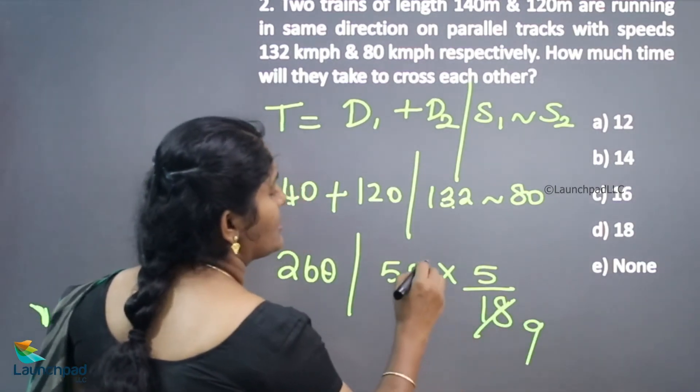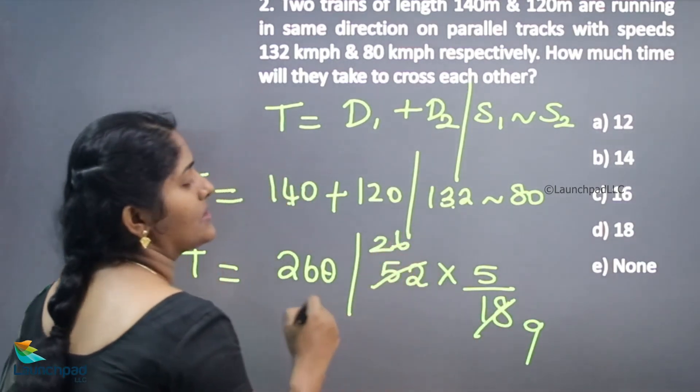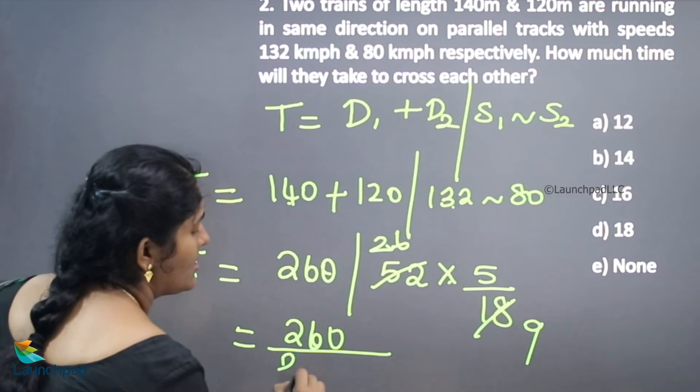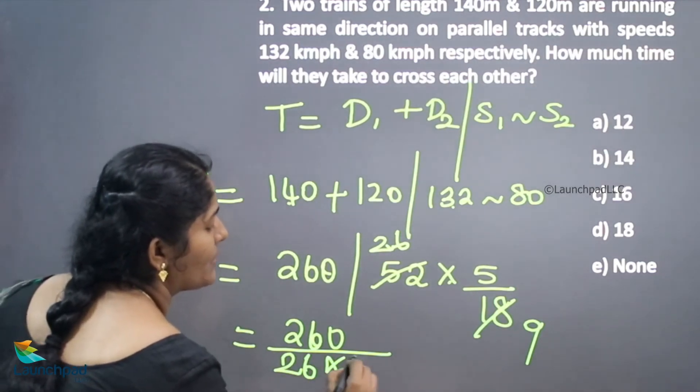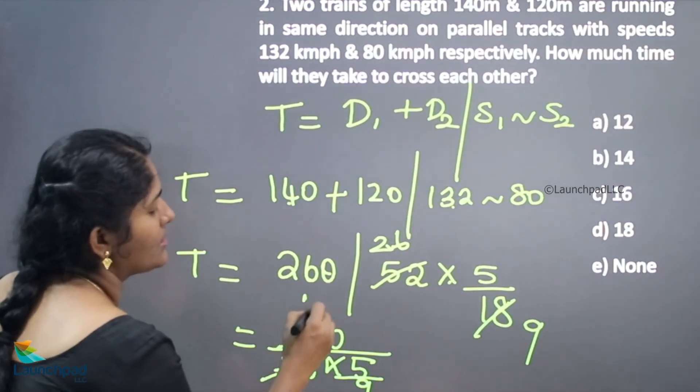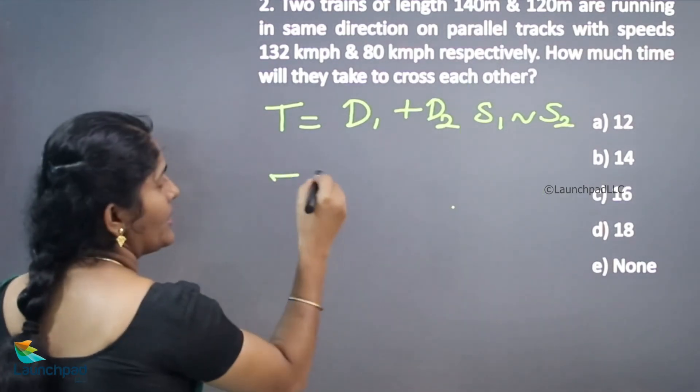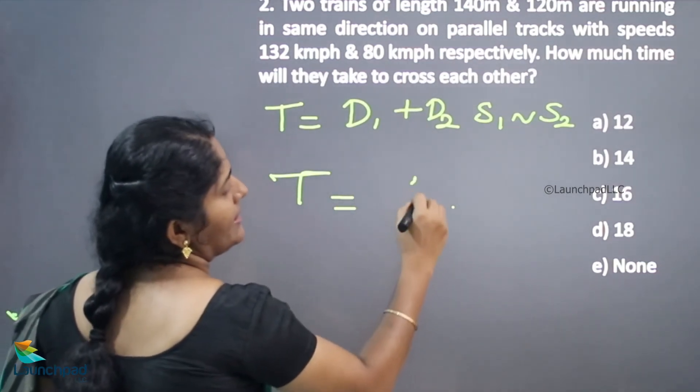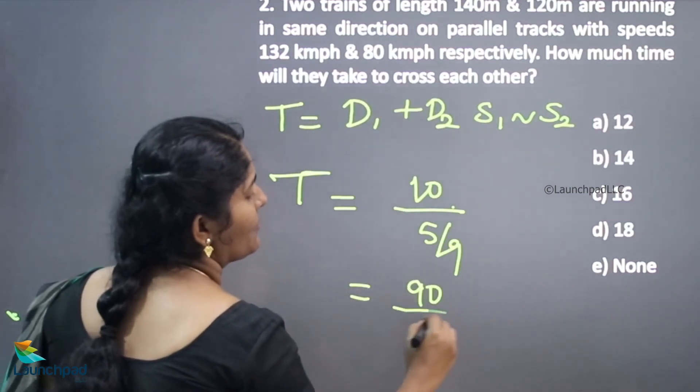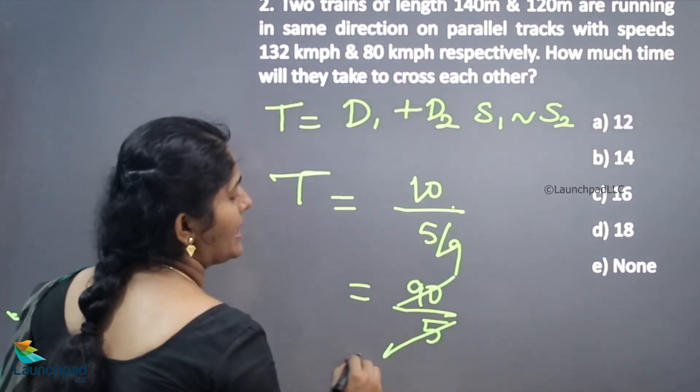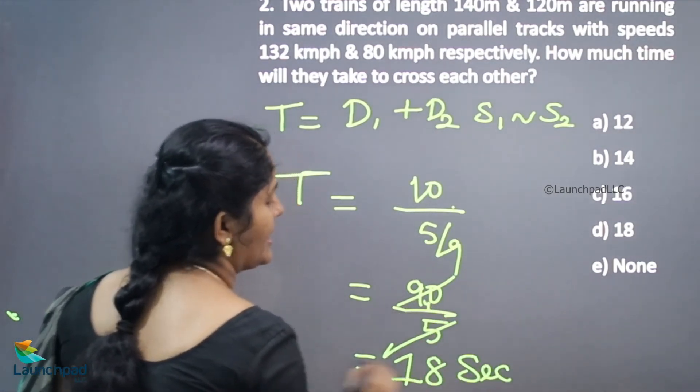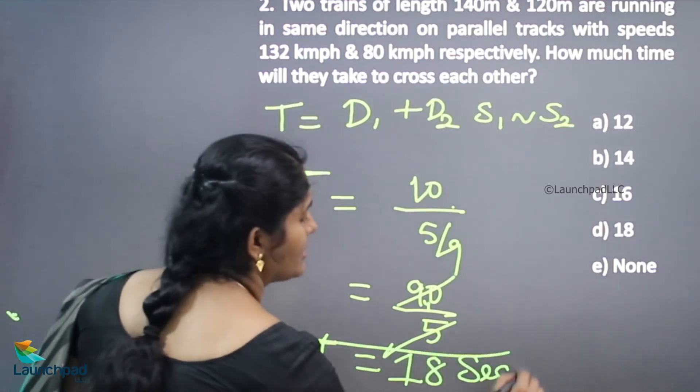So this is 9 times and this is 26 times. So 26 into 5, hence 260 by 26 into 5 by 9. So here this is 1 time, this is 10 times. So time is equivalent to 10 by 5 by 9, hence 90 by 5, we can cancel it. 90 by 5 means 1 5s are 5, remainder 4, 8 5s are 40. 18 seconds to cross each other.